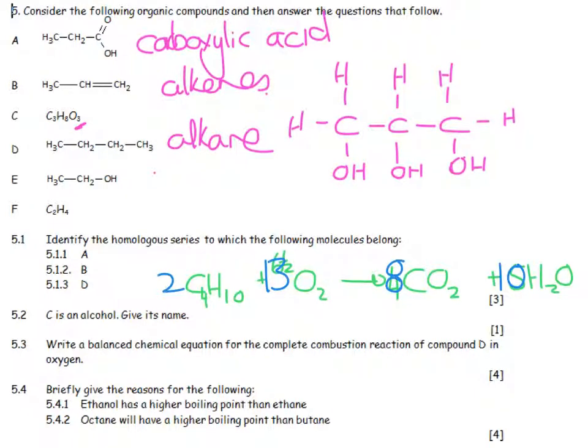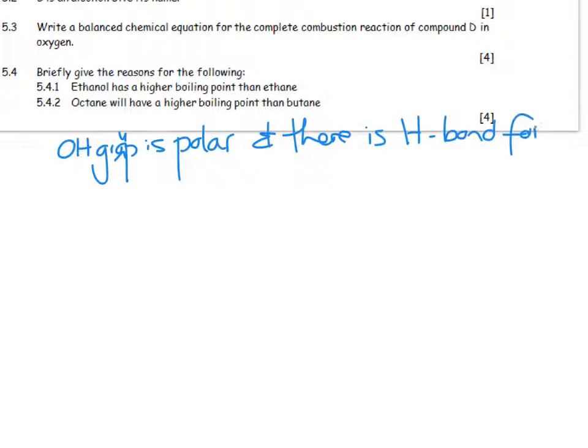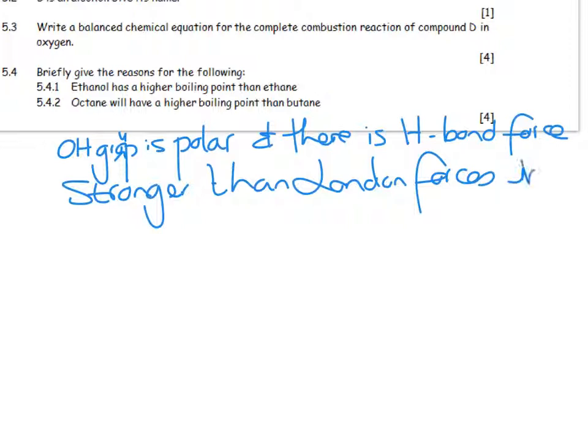Briefly give the reasons for the following. Ethanol has a higher boiling point than ethane. The OH group is polar and there is hydrogen bond forces in the OH group only. These are stronger than London forces in ethane.